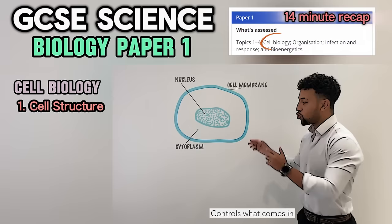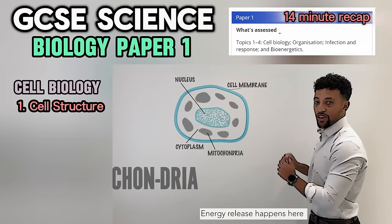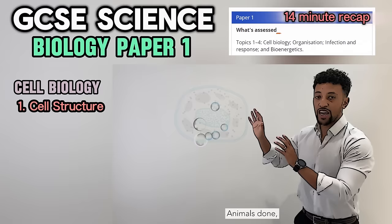The cell membrane controls what comes in and comes out. Now mitochondria — energy release happens here. Ribosomes are near, they make proteins all year. Animal cell done.